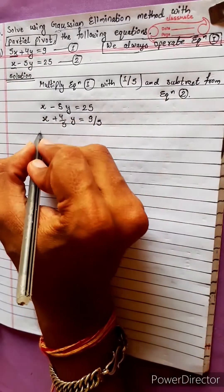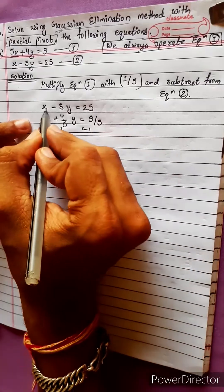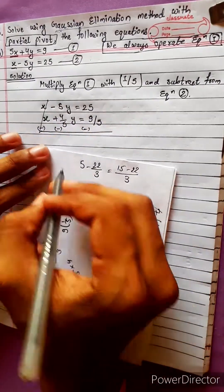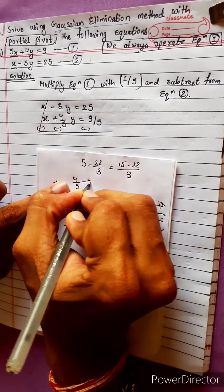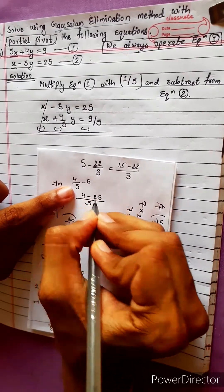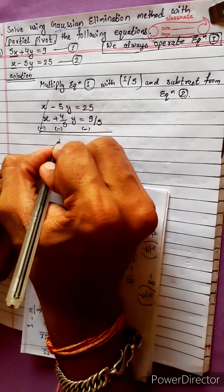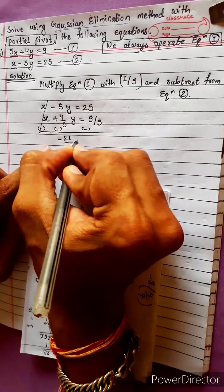Now subtract. Minus minus gives plus, so they cancel. Here we have 4/5 minus 5. Taking LCM: 4 minus 25 equals minus 21/5. So minus 21/5 y.